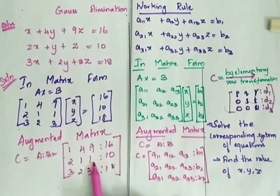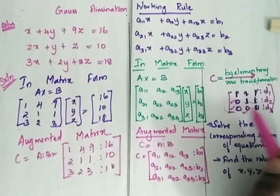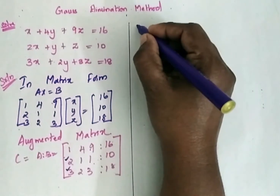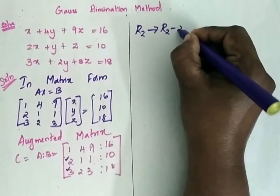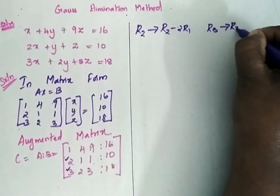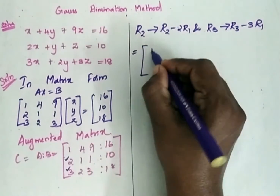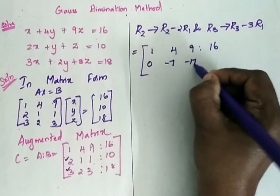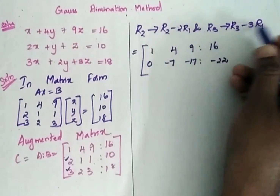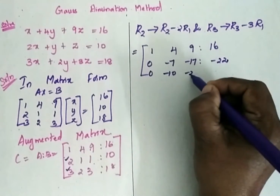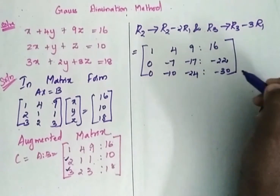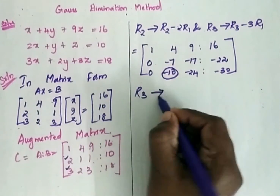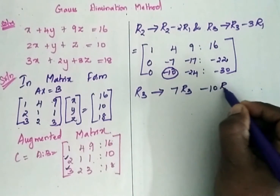Now this matrix has to be simplified to upper triangular format with zeros in the lower places. First we have to make these two places zero. So the first two transformations are: R2 → R2 minus 2R1, and R3 → R3 minus 3R1. After simplification, the second row becomes 0, minus 7, minus 17, minus 22, and the third row becomes 0, minus 10, minus 24, minus 30. Now the next step is to get zero in the next position, so R3 is replaced by 7R3 minus 10R2.